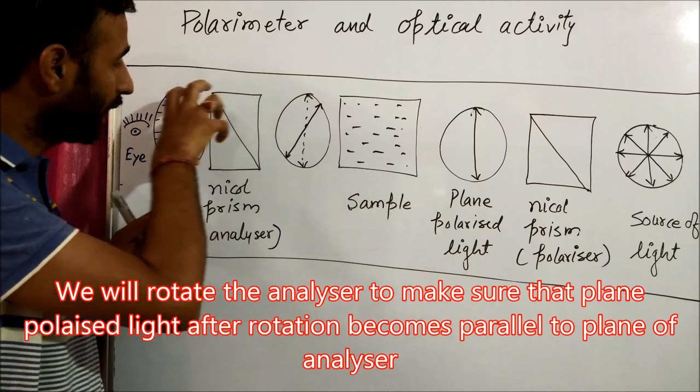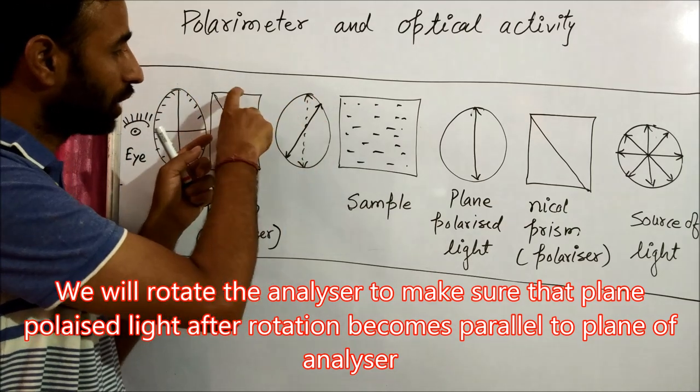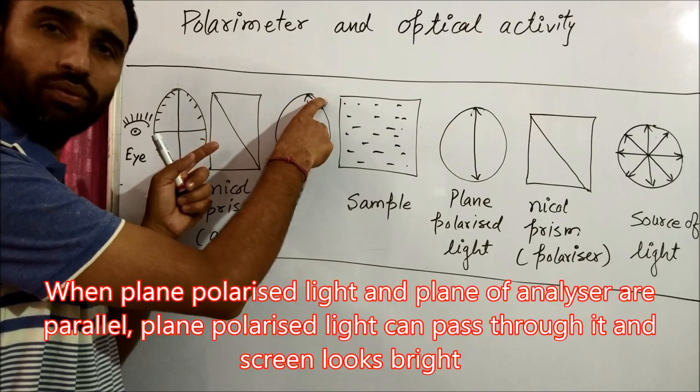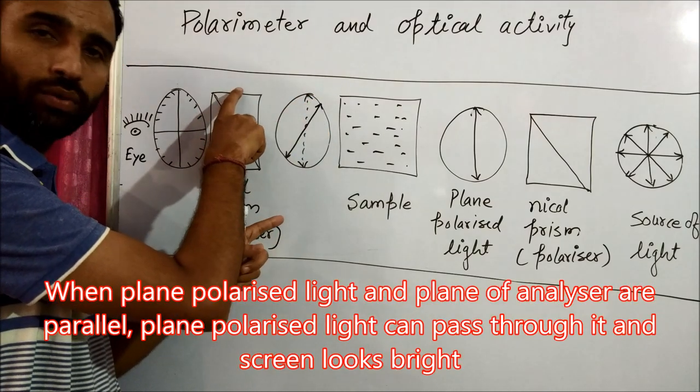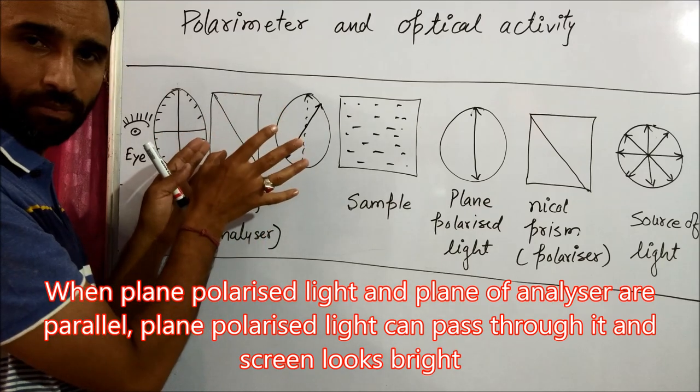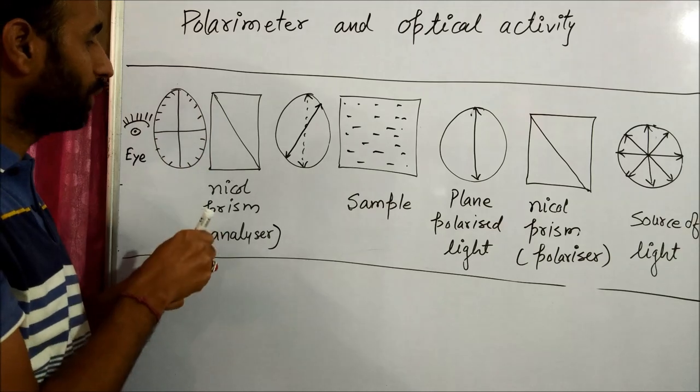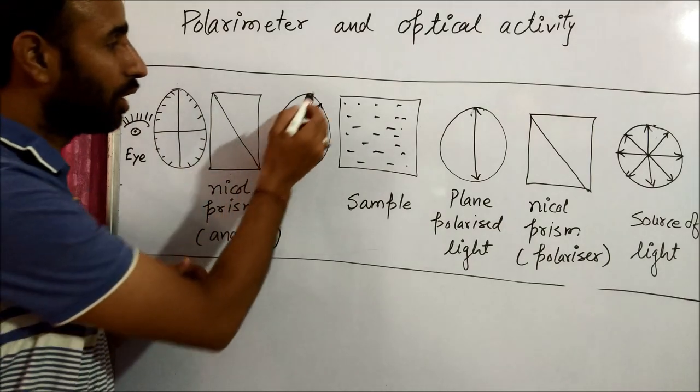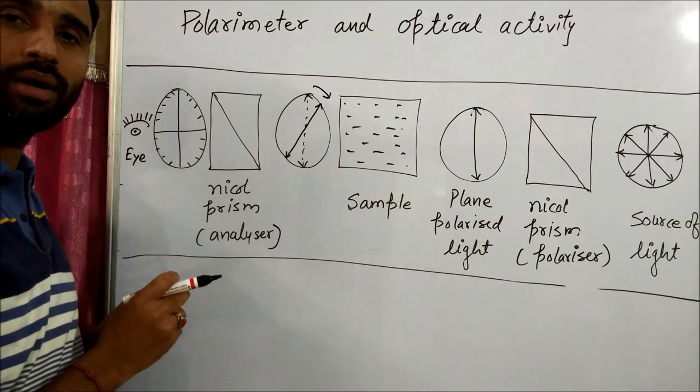Now, what will we do? We rotate this prism so that the plane of the light and plane of the nickel prism become the same. And accordingly, this rotates and we get an idea of how much we have to rotate to get brightness.